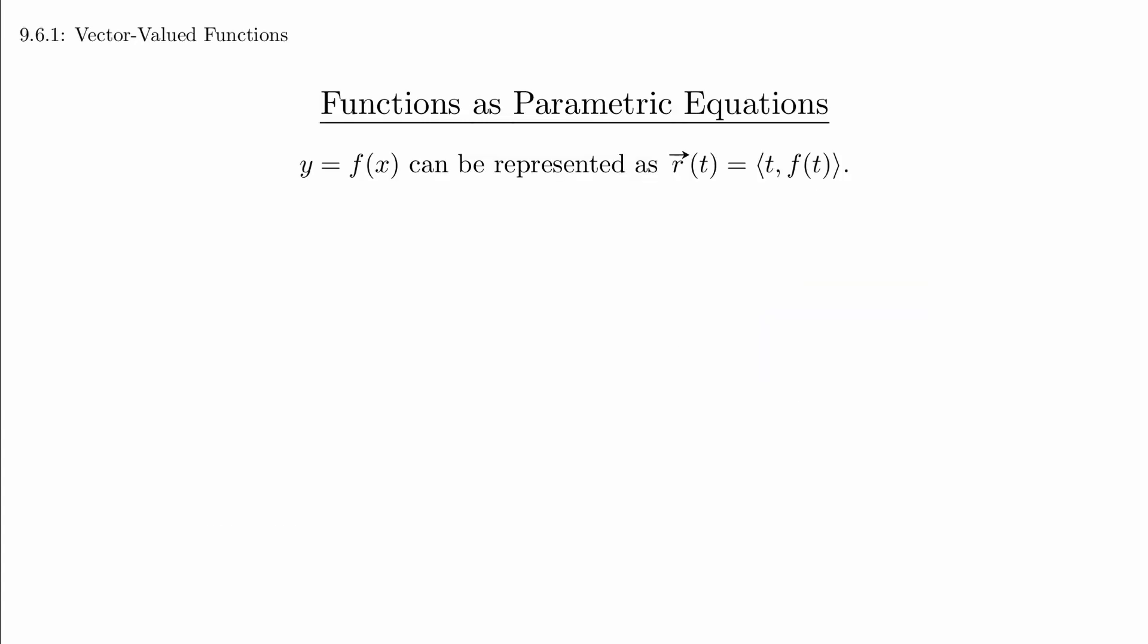If we wanted, we could take a function of the form y = f(x) and turn it into a vector function ⟨t, f(t)⟩. This is really just a different way of notating the coordinates of a position on the graph as a vector instead of as a point.